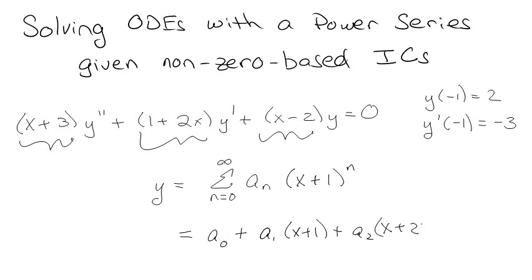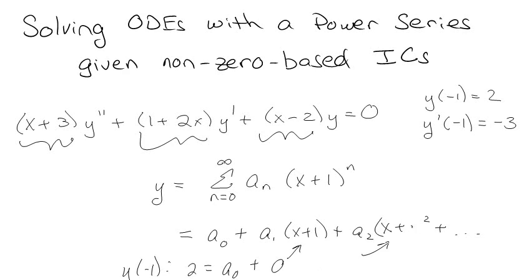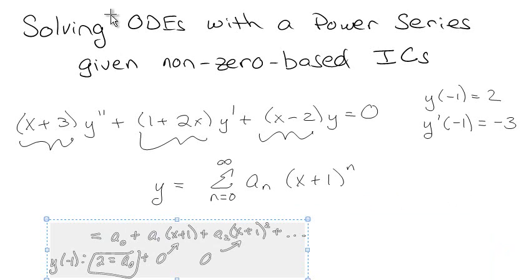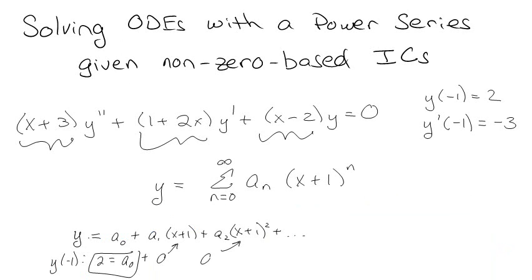This is great because if I apply my initial condition y at negative one, I get that two equals a₀, plus terms where plugging in x = -1 gives (x+1) = 0, so all those terms vanish. So I in fact get that two equals a₀. The idea is: when I apply the initial condition, it's really ideal that all the other terms except the first one go to zero, so I can actually find one of those coefficients.